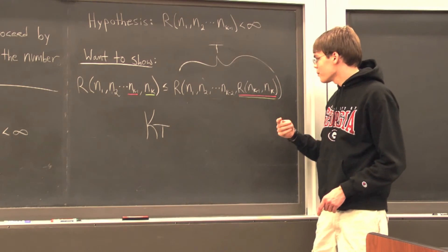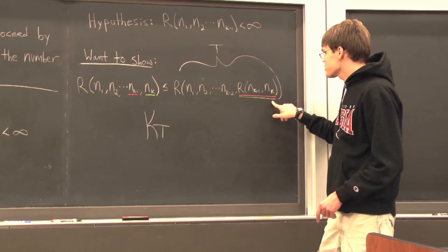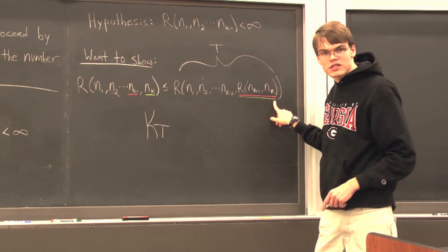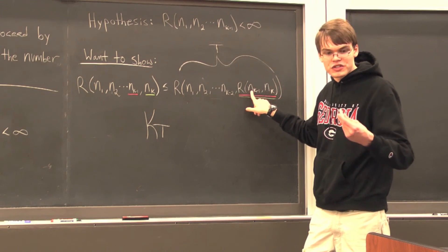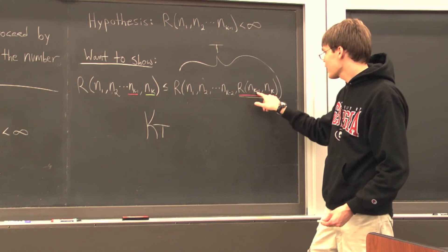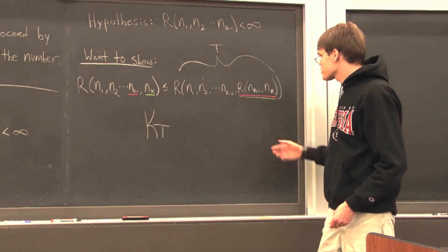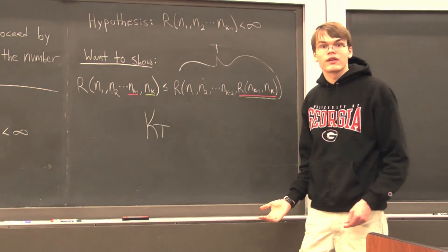Now, because we have a 2 coloring on this many vertices, well, by definition of this Ramsey number, that means that we have either a monochromatic subgraph, which is actually red on nₖ₋₁ of those vertices, or a monochromatic subgraph on nₖ of those vertices that is colored green, our kth color.